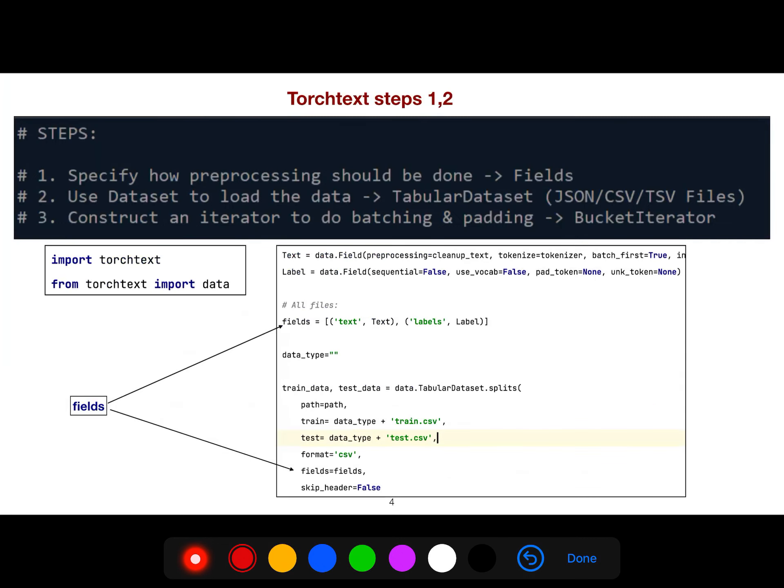Let's go and see the steps. The first step is specify how preprocessing should be done. This is fields. For example, we know our dataset: the first column is text and the second column is label. Then the second step is use dataset to load the data, tabular dataset. It can accept JSON, comma separated, and TSV. You give it here and you specify fields here. That's it.